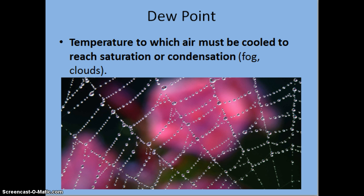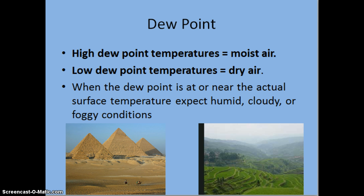Dew point is the temperature that the air has to be cooled to in order to reach saturation. When that happens, we will experience things like fog and clouds. High dew point temperatures mean we have moist air; low dew point temperatures mean we have dry air. If the dew point is at or near the surface temperature, then you can expect it to be extremely humid outside, with either fog close to the ground or a lot of clouds in the sky.